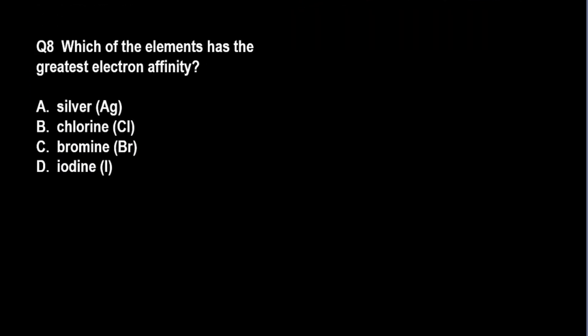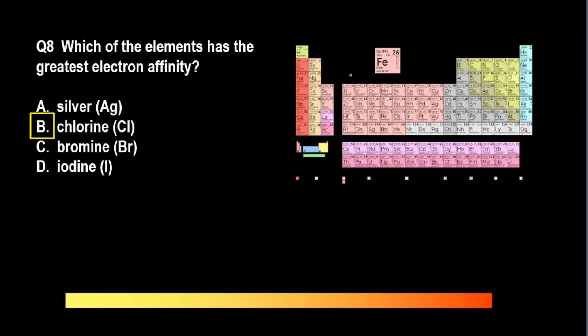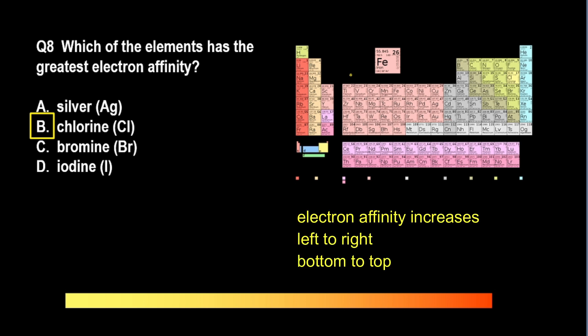Let us go to the next periodic trend. Which of the elements has the greatest electron affinity? A. Silver, B. Chlorine, C. Bromine, D. Iodine. The answer is chlorine. Electron affinity is the opposite of ionization energy — it tells us how much an atom wants to gain an electron. Not taking into account the noble gases since their shells are already full, electron affinity generally increases as we move from left to right, and generally increases as we go up. Thus, fluorine has the highest electron affinity; if it gains one electron, it will have a full shell like the stable noble gases.